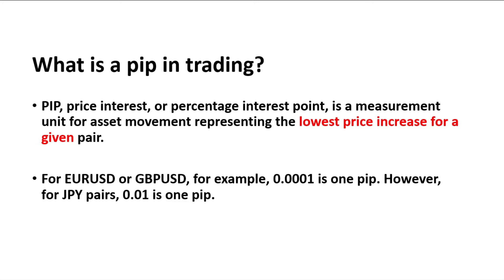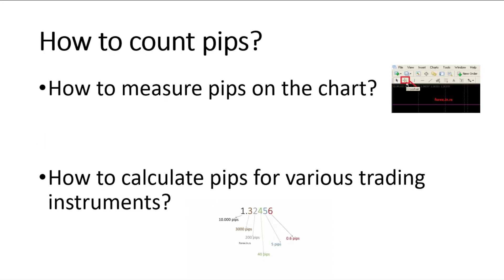For Japanese pairs, like US Dollar/Japanese Yen or British Pound/Japanese Yen, 0.01 is one pip. In this video, we'll try to answer and show everything. We have two major questions: first, how to measure pips on the chart; and second, how to calculate pips for various trading instruments.